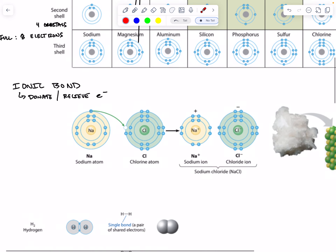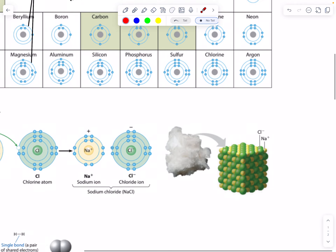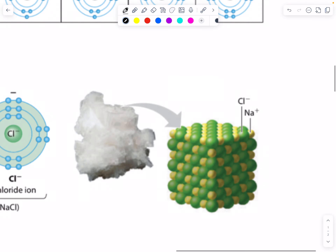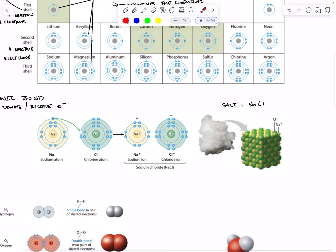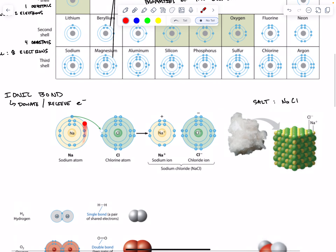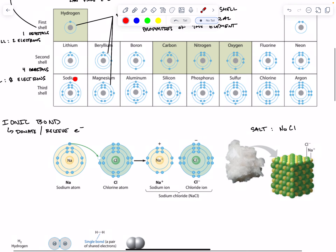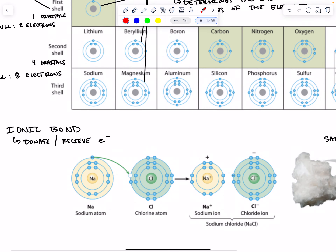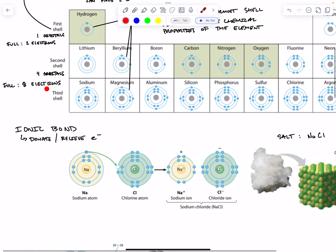Let's talk about table salt — NaCl. Table salt is a one-to-one association of chlorine to sodium, and it's a type of ionic bond. Here we have sodium. You can see sodium down here in the third shell — notice that it has one electron in its outermost valence shell, and to be full it wants eight.